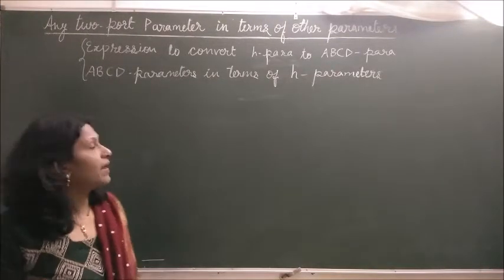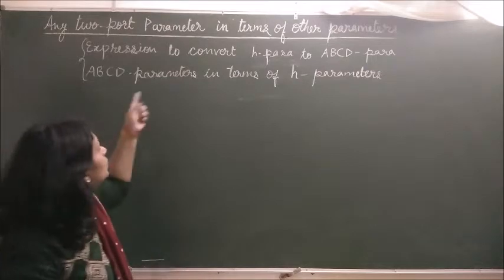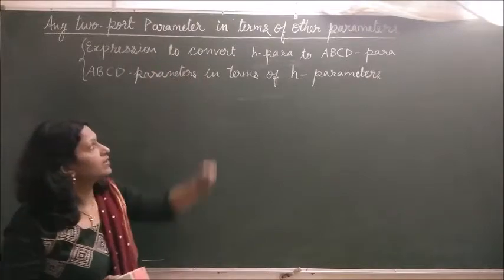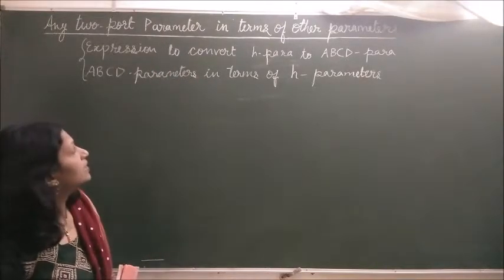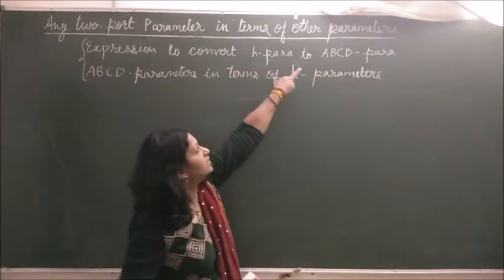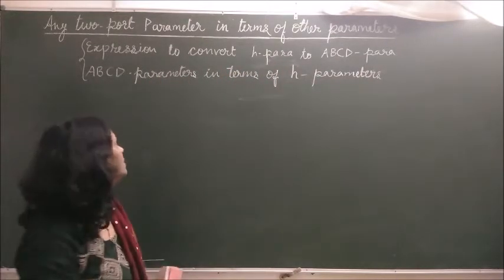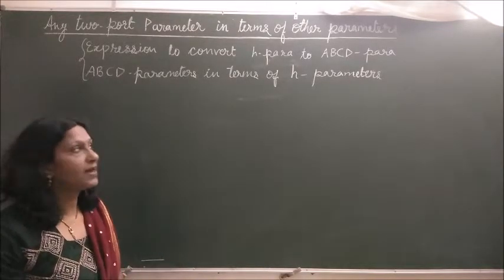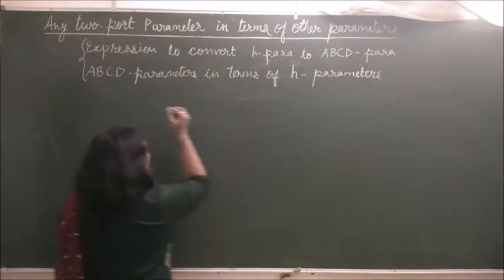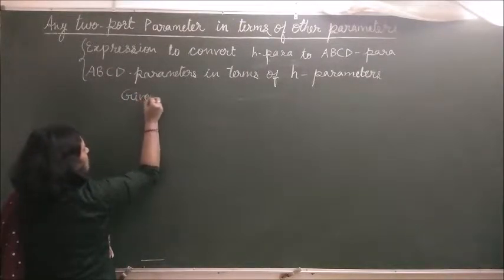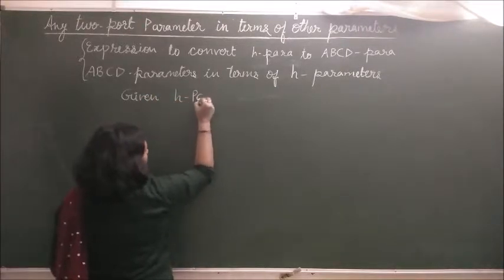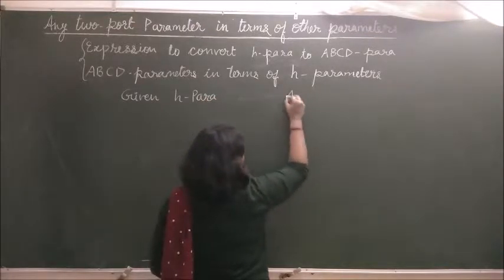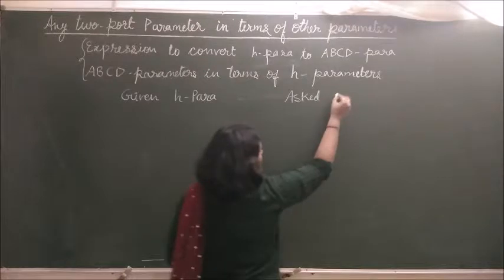To convert any two-port parameter into another, it can be asked like this: expression to convert H parameter to ABCD parameter. That means this H parameter needs to be converted into ABCD parameter, or it can be asked as ABCD parameter in terms of H parameters. In both cases, the given parameter is H, and the desired parameter is ABCD.